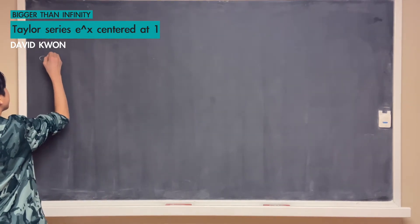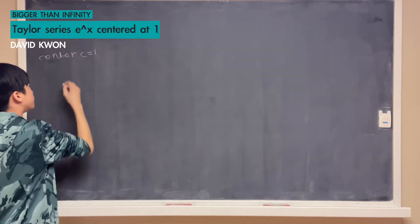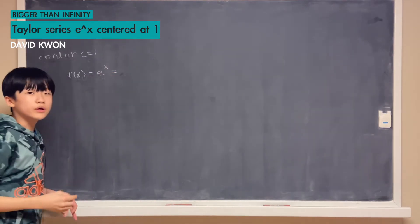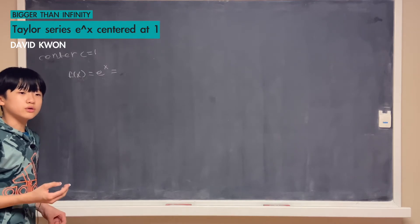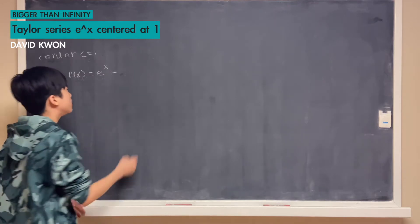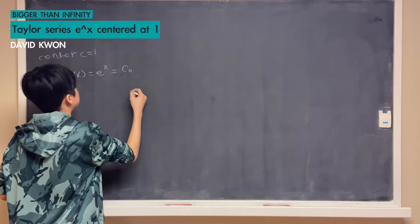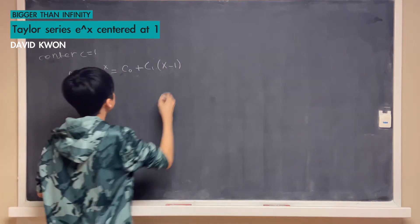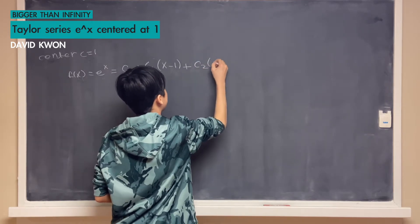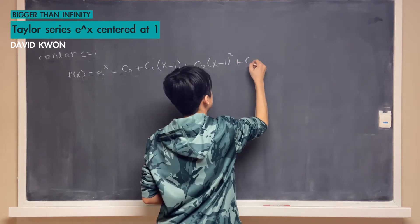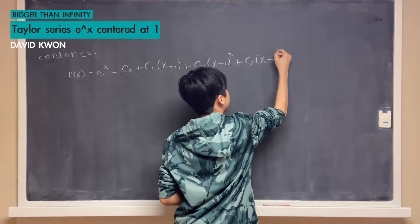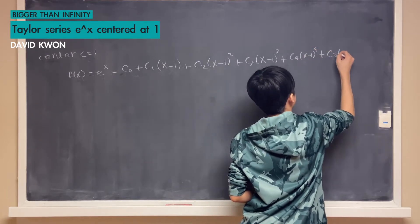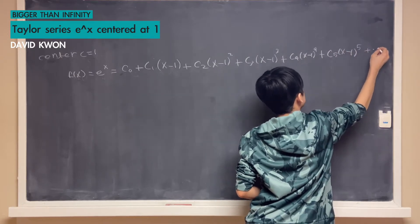So we have our center c, which is equal to 1. And our function e to the power of x, we will equal it to our polynomial's equation. Since it is being shifted over to the left side, we write down c sub 0, plus c sub 1 times (x minus 1), since our center c is 1. Then we add c sub 2 times (x minus 1) to the power of 2, plus c sub 3 times (x minus 1) to the power of 3, plus c sub 4 times (x minus 1) to the power of 4, plus dot dot dot, meaning it goes on forever.